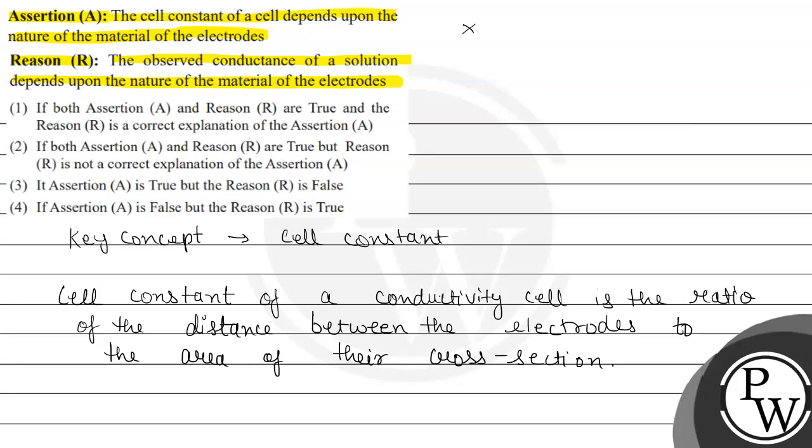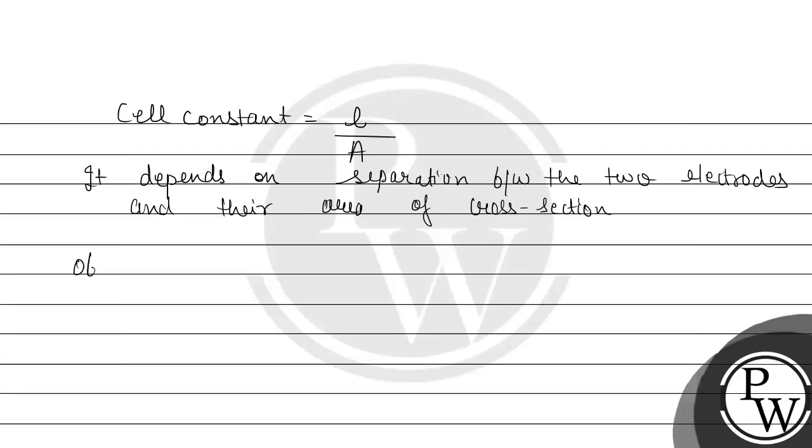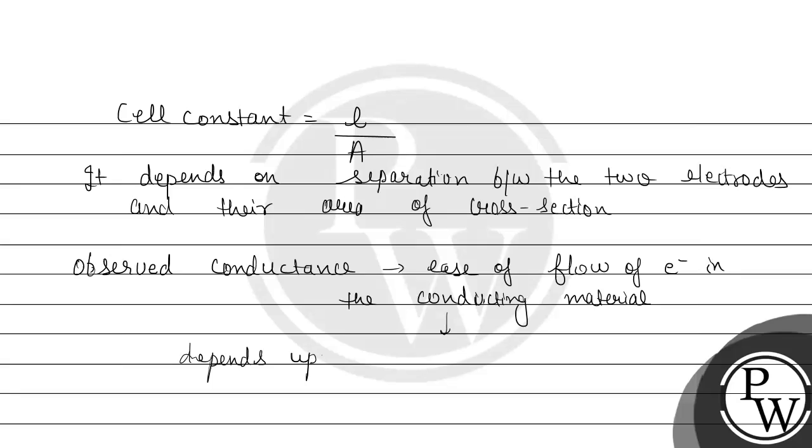And reason says the observed conductance of a solution depends upon the nature of the material of the electrode. So observed conductance, that is the general conductance, which is the ease of flow of the electrons in the conducting material. And observed conductance depends on the nature of the material.